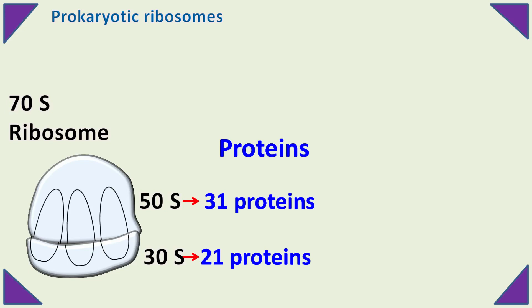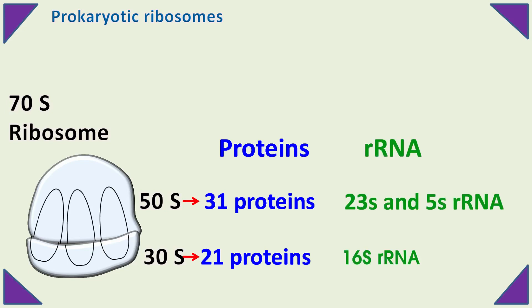If we talk about rRNA, then the 50S subunit is made up of 23S and 5S rRNA, whereas the 30S subunit is made up of 16S rRNA.